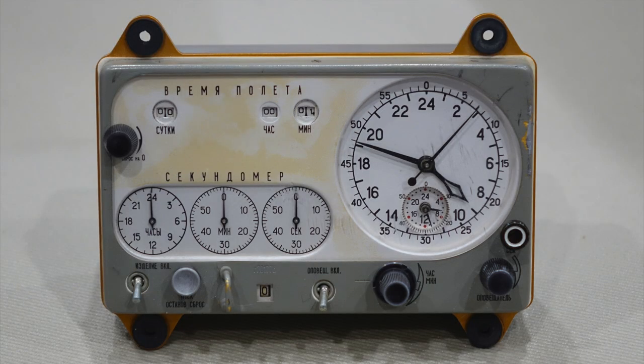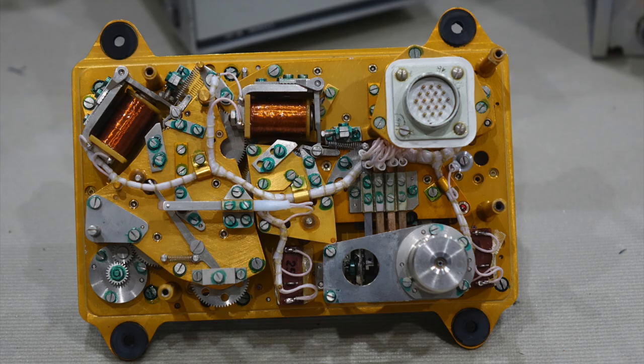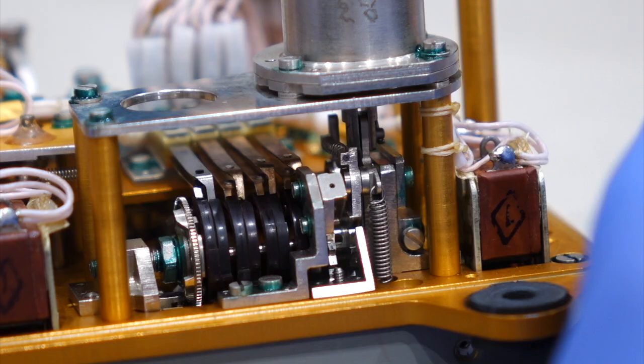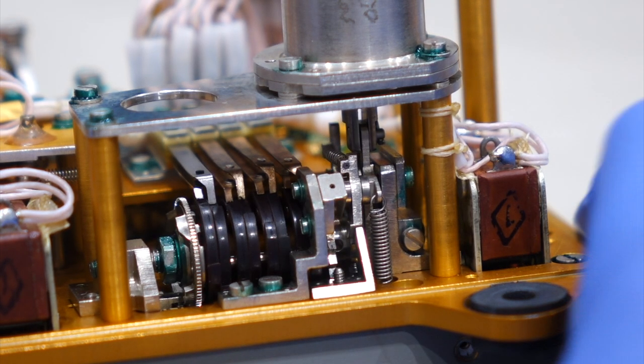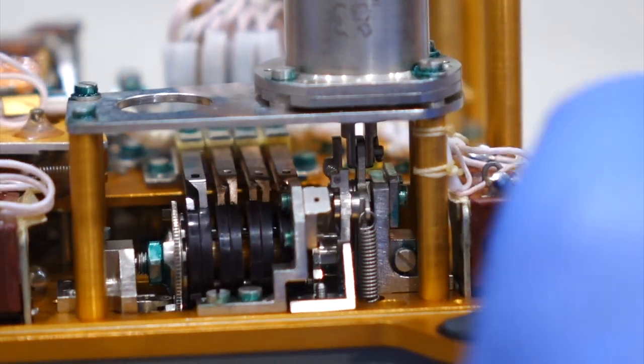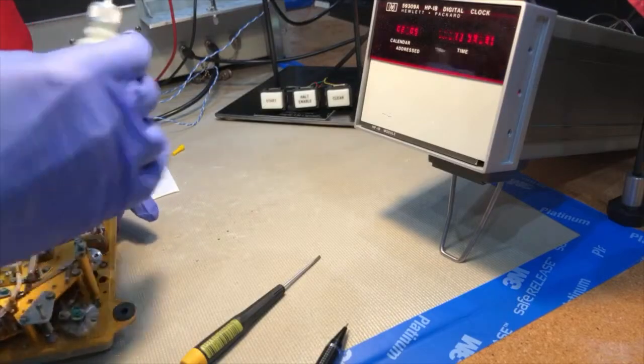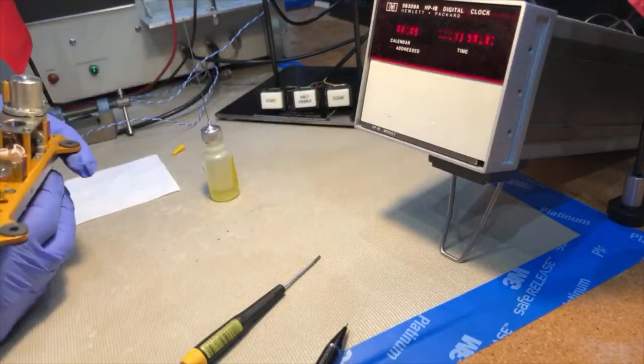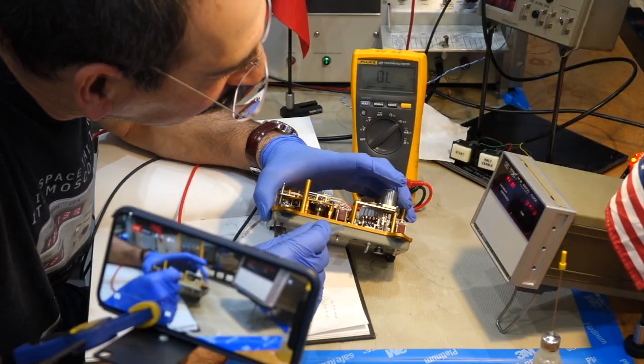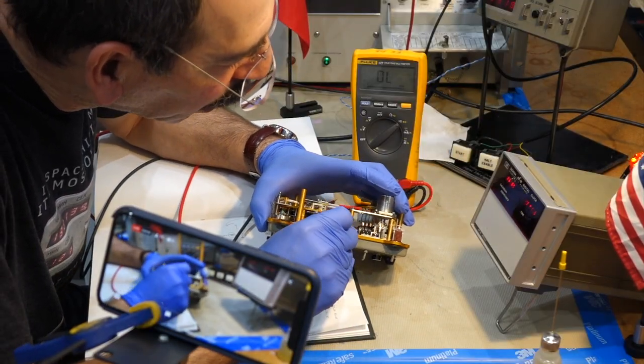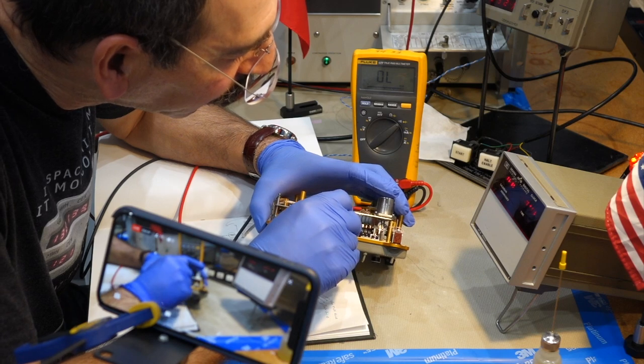This beauty had been loaned to us by noted space collector Steve Jurvetson. Except for two rather minor repairs, a jamming stopwatch start-stop button which was taken care of with a single drop of oil, and an oxidized stopwatch actuator contact which just needed a little bit of burnishing, it was in excellent condition.